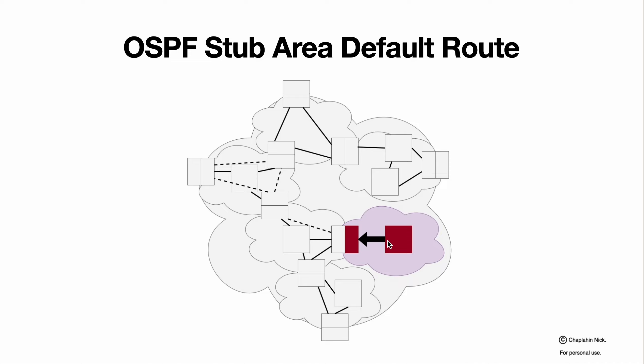Much more cheaper and simpler devices can be used within stub area, except the boundary device. The boundary device needs to be powerful.